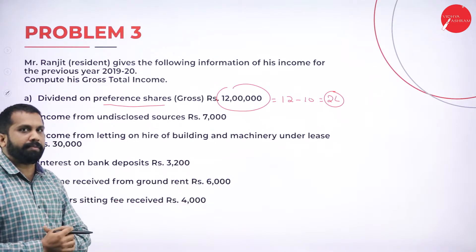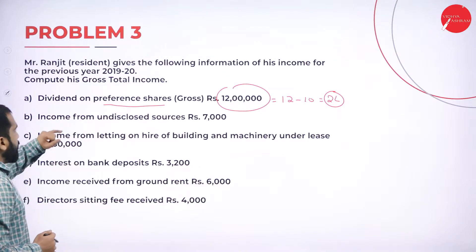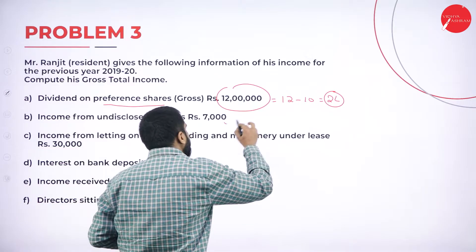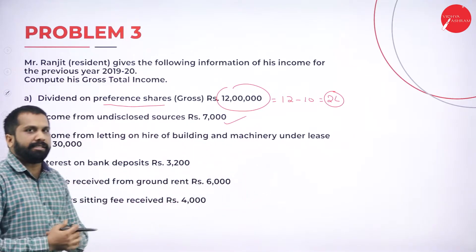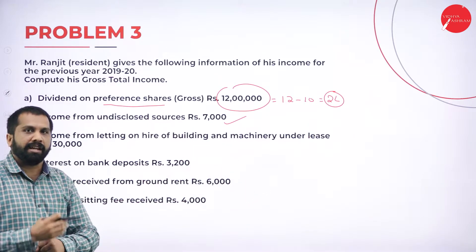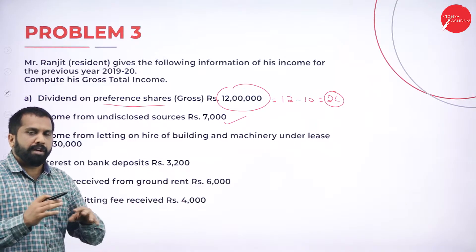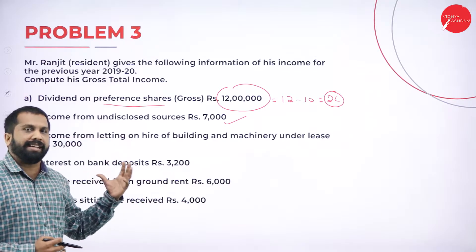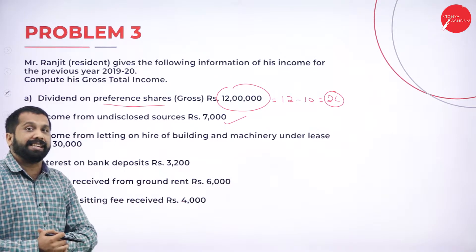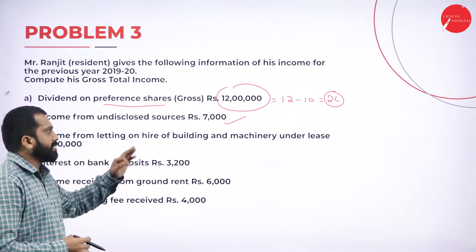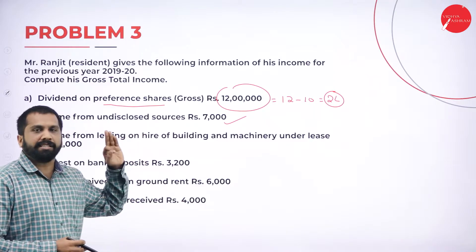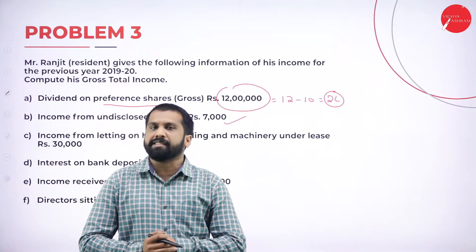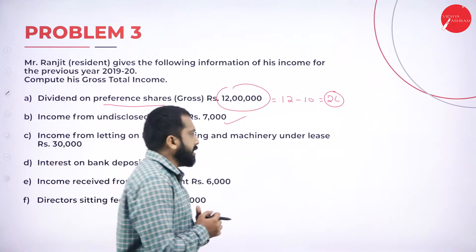Now one more concept: income from undisclosed sources is fully taxable. Undisclosed means there are a few sources where you cannot disclose — you don't have any proof or documents for that income. Those are called undisclosed income and you have to consider that as taxable. A few sources are called casual income, which is actually a five-mark theory topic.